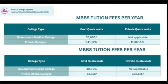Private quota seats are not available in government colleges. For private colleges, the fees through KEA — not a management seat — will be 1,41,621. For private quota seats in private colleges, the fees are 11,88,167 per year. The first allotment will be the government quota seat at 1,41,000, and the private quota seat allotment fees will be 11,88,167 per year.